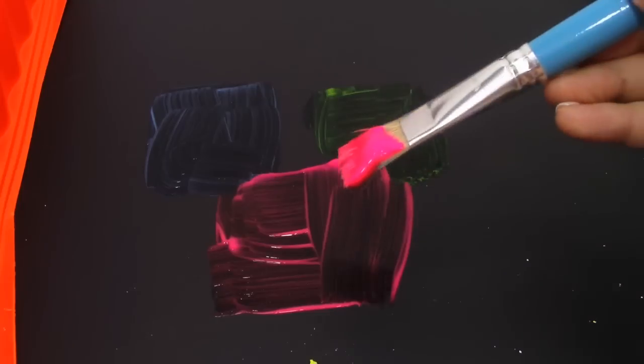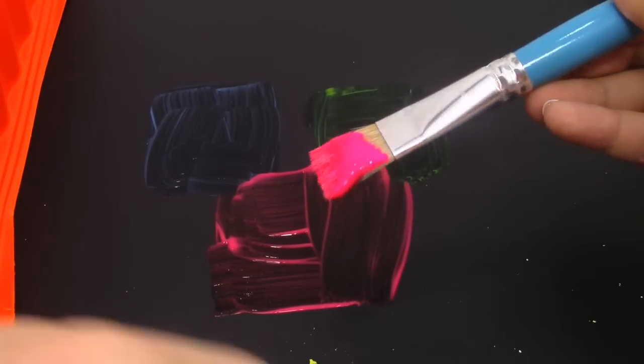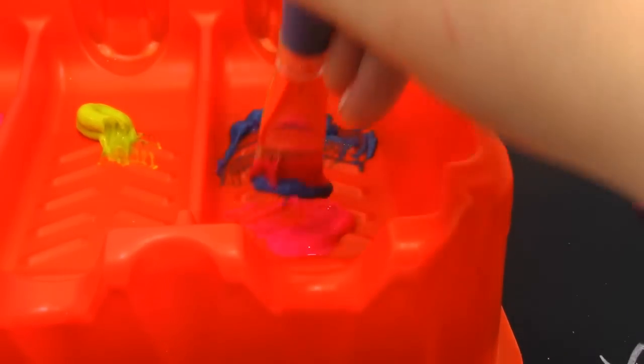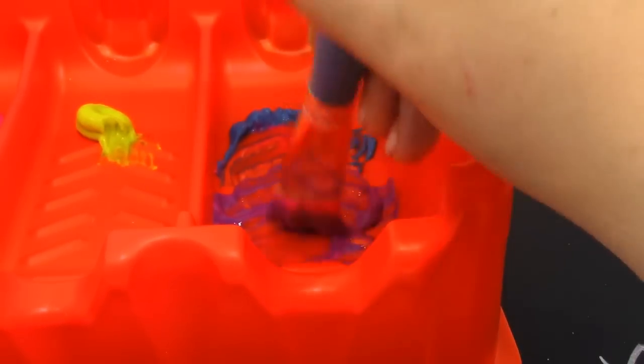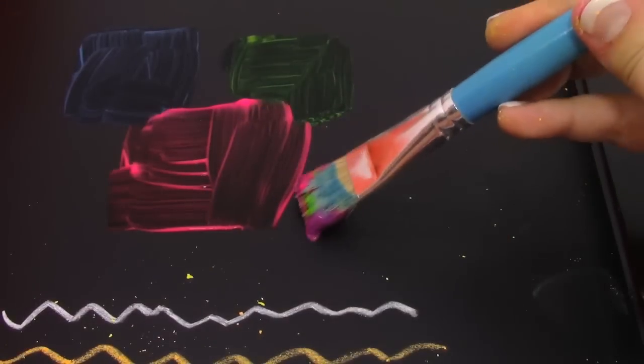Alright, so now I'm going to mix some colors. I'm going to try and mix and make some purple. So I have some pink. I'm going to try and mix it with some of this blue. And that mixed really well. Now we've got a nice purple color. I'm just going to do some purple right here.